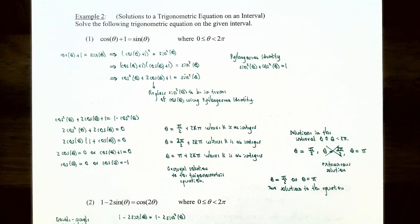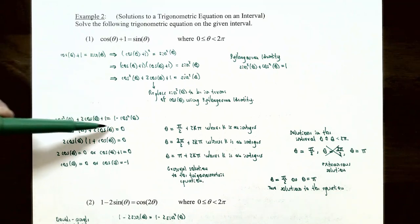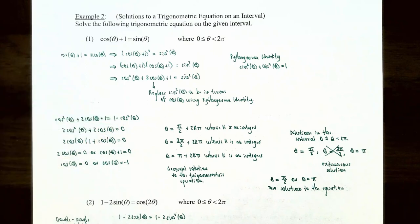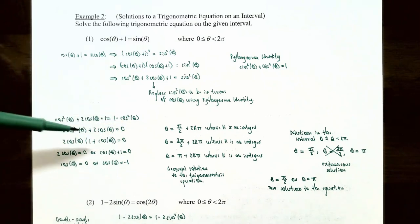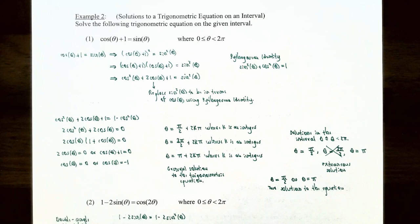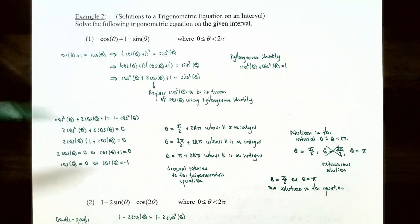Let's move all terms to one side so the equation equals zero. Subtracting one and adding cosine squared theta to the left side gives two cosine squared theta plus two cosine theta equals zero. Both terms have a factor of two cosine theta in common, so we factor that out: two times cosine theta times the quantity cosine theta plus one equals zero. Since the product equals zero, at least one factor must equal zero.